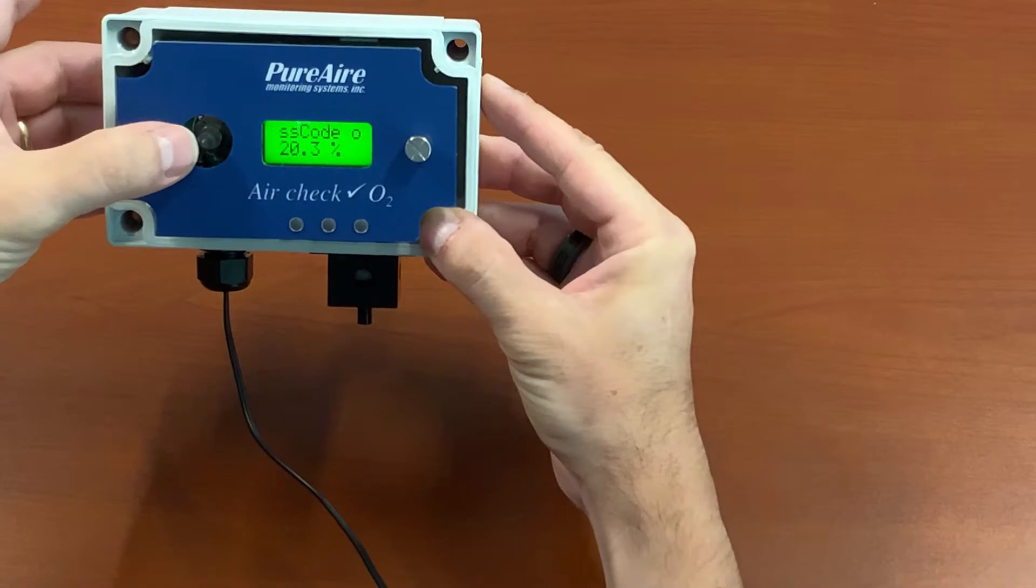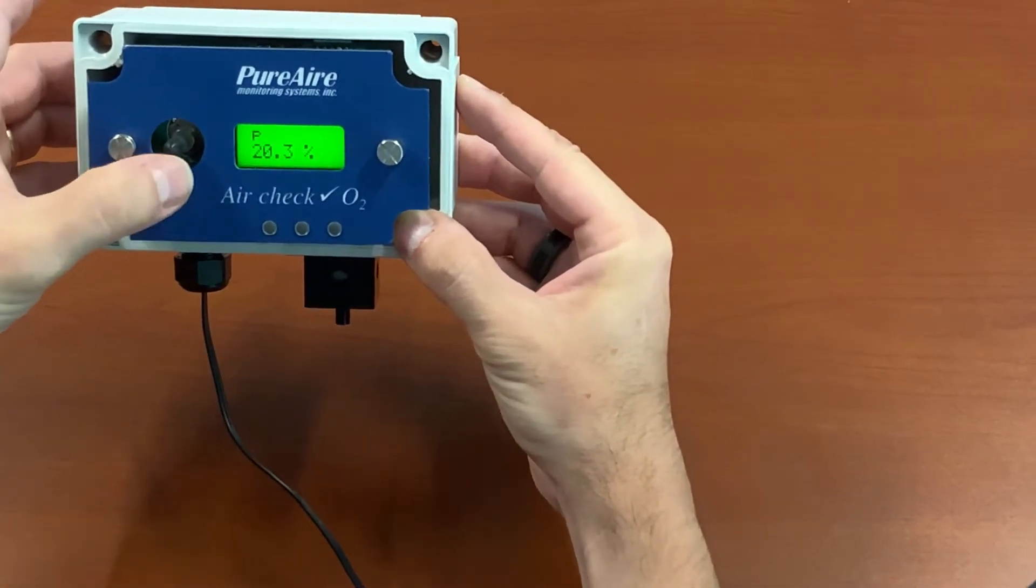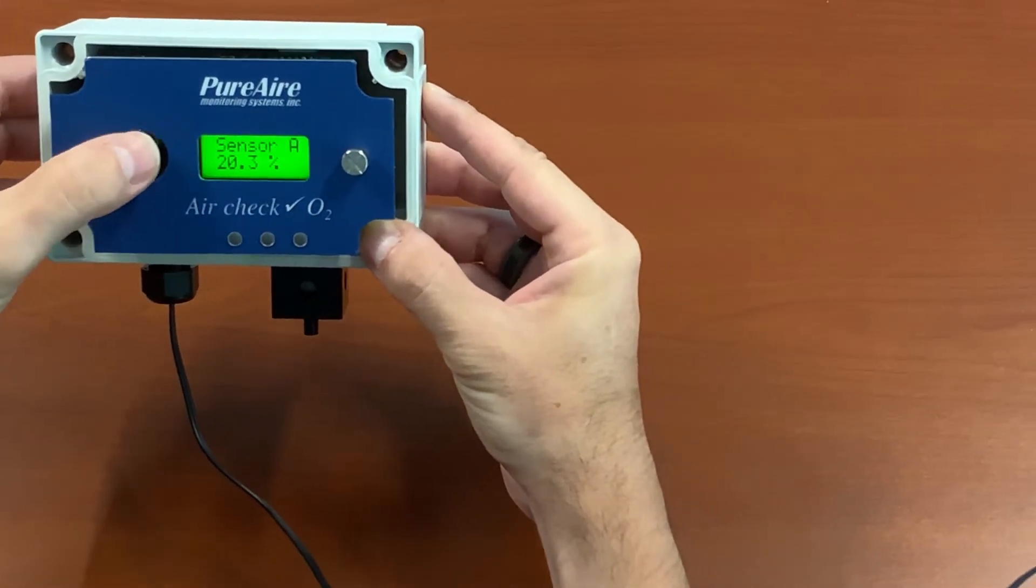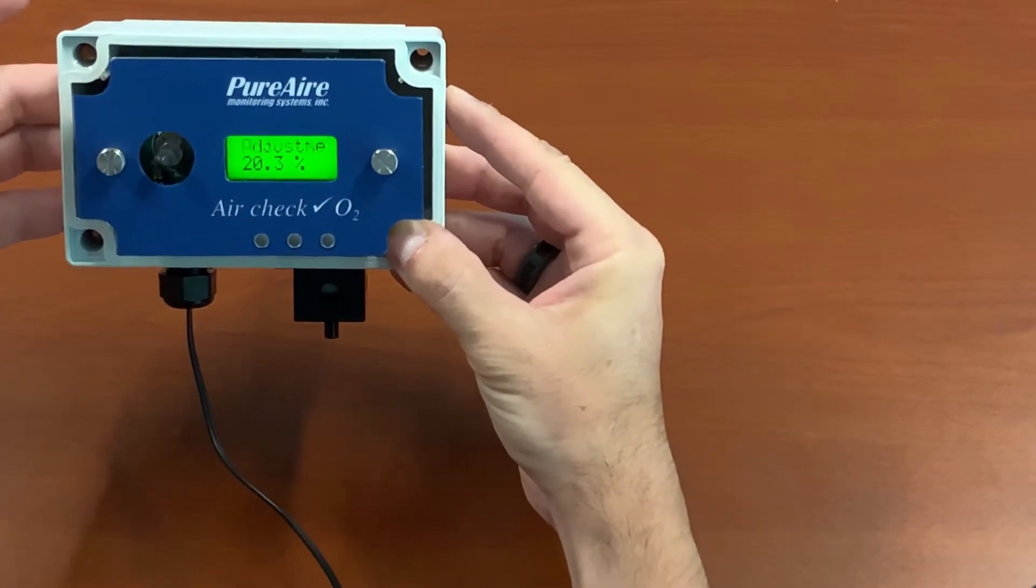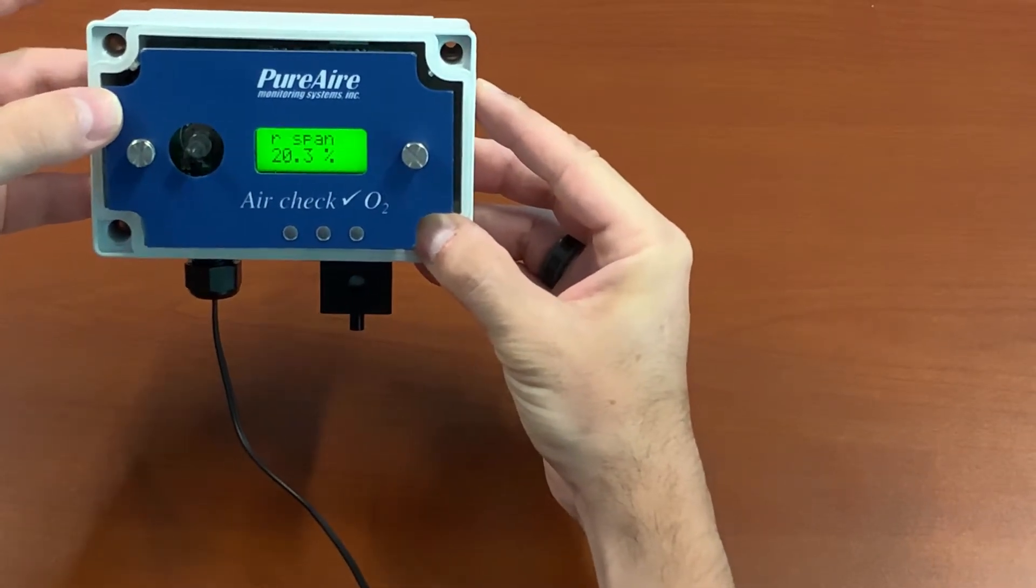Once you get that, you're going to move your joystick to the right one time to enter your menu system. Now you're going to go up twice to sensor adjustment, move it to the right once, and set sensor span.